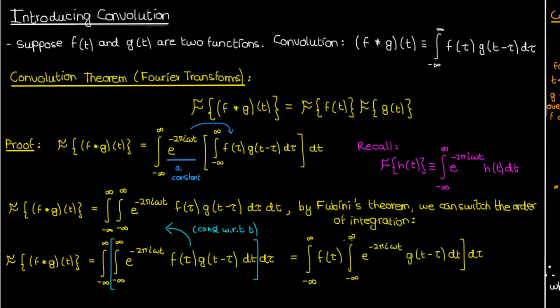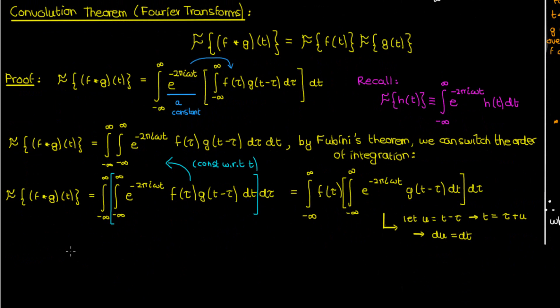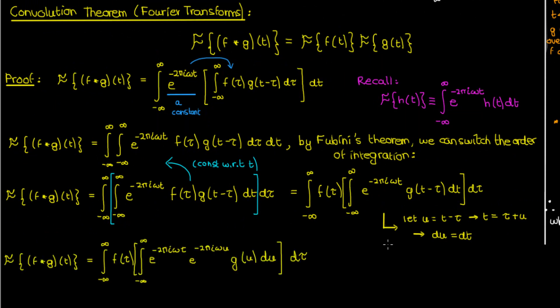Next we replace t minus tau in the inside integral with a variable u. In that case, we can express t as tau plus u, and we can write du as dt — that's because tau is effectively a constant when evaluating the inside integral, which is why there's no tau in the expression for du. When we carry out the substitution and expand out the exponential, we can see that the exponential term in tau can be taken outside the integral.